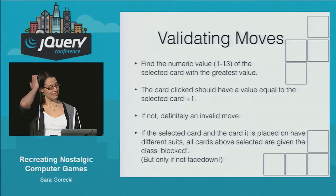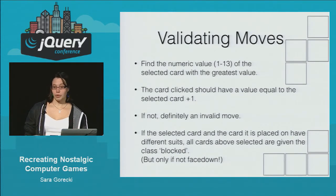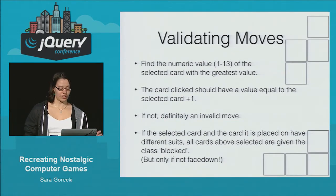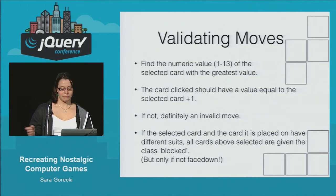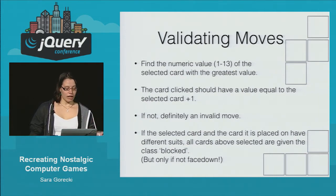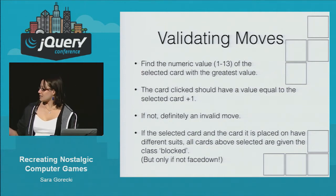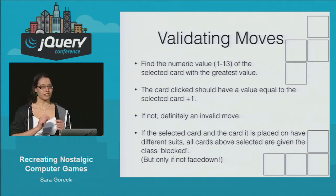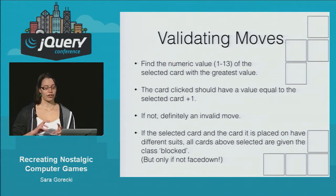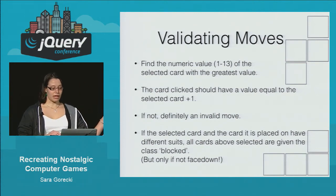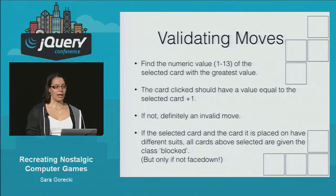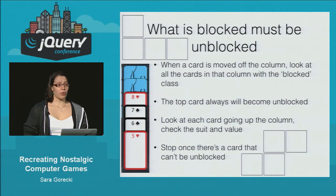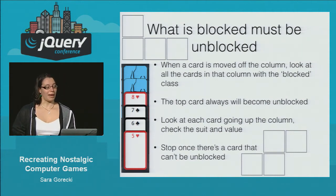So validating. When I was doing this, I was literally just pulling the values out of the DOM — just finding the elements I wanted and pulling everything out. Since all the cards have children divs with the properties that matter, including the value and the class, I would find the selected card, pull out those properties, compare them to the column I was going to move to, and then apply the blocked class and remove face-down as needed.